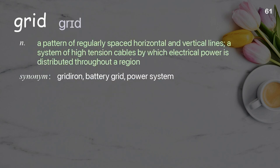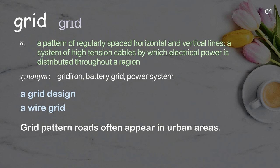Grid: a pattern of regularly spaced horizontal and vertical lines; a system of high-tension cables by which electrical power is distributed throughout a region. Examples: a grid design; a wire grid; grid pattern roads often appear in urban areas.